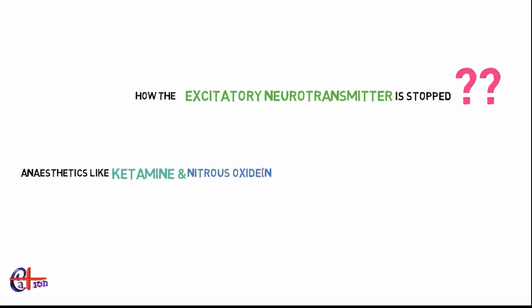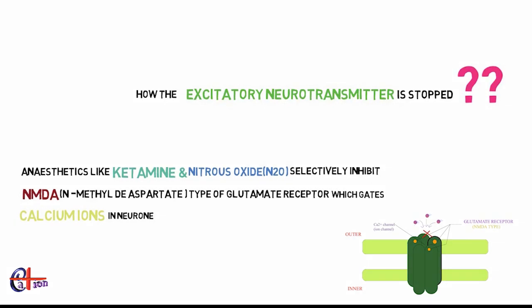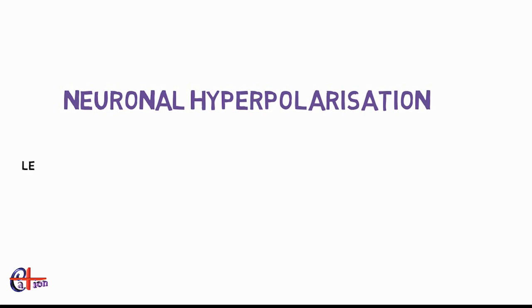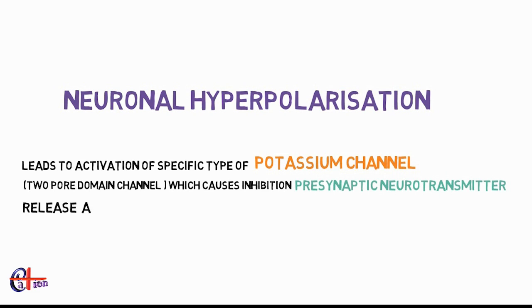For excitatory neurotransmitter suppression, anesthetics like nitrous oxide and ketamine selectively inhibit the NMDA type of glutamate receptor, which normally lets calcium ions into the neuron. Inhibition of these receptors causes blockage of nerve conduction. Another mechanism is neuronal hyperpolarization through activation of specific potassium channels, which causes inhibition of pre-synaptic neurotransmitter release as well as post-synaptic activation, thus blocking nerve conduction.